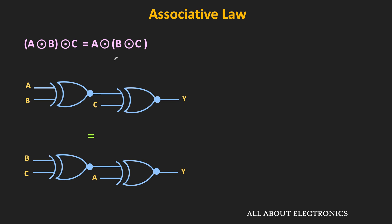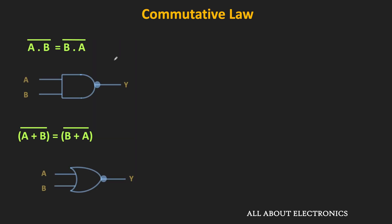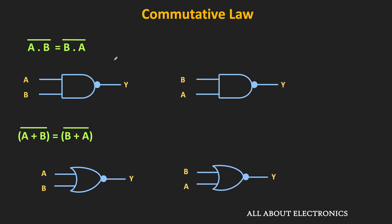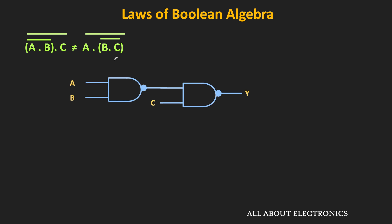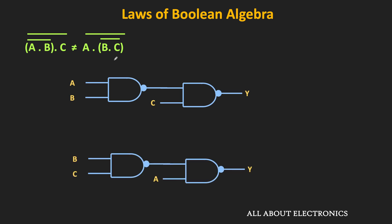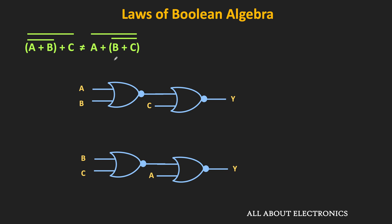If we talk about the NAND and NOR gates, they are commutative but they are not associative. That means for NAND and NOR, if we interchange the two inputs we get the same result, but they are not associative. For the NAND gate, (a NAND b) NAND c is not the same as a NAND (b NAND c). Likewise for the NOR gate, (a NOR b) NOR c is not the same as a NOR (b NOR c). This can be proved using the truth table.